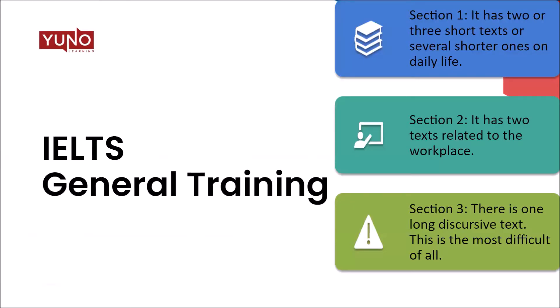In the IELTS general training reading test, there are three sections. In section one, you get two, three, or several shorter texts based on daily life — they can be as simple as notices you read when you go to a park. In section two, you get two texts related to the workplace, such as policies in an organization or how to apply for leave. In section three, there is one long discursive text — this is the most difficult one for general training students.